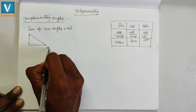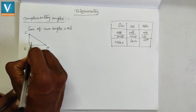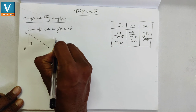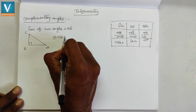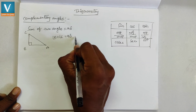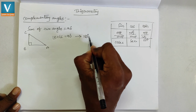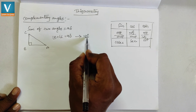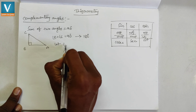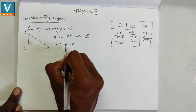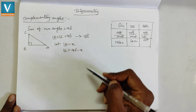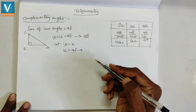Consider right triangle ABC with a right angle at B, so this angle is 90 degrees. Angles A and C must be complementary, meaning angle A plus angle C equals 90 degrees, since the sum of angles in a triangle is 180 degrees. If angle A equals X degrees, then angle C is 90 degrees minus X, and these two angles are complementary.